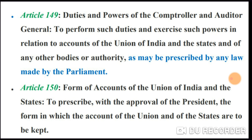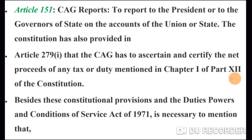Article 150 deals with the form of accounts of the Union of India and the states. The CAG is to prescribe, with the approval of the President, the form in which the accounts of the Union and of the states are to be kept. Article 151 relates to the CAG report — to report to the President or to the Governor of the state on the accounts of the Union or the state. The constitution has also provided for how the CAG report is to be submitted.